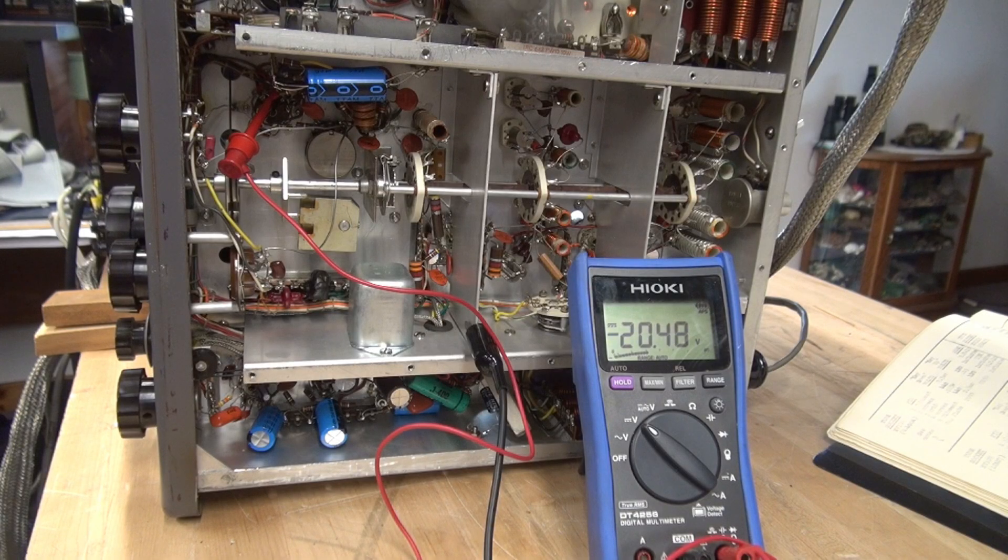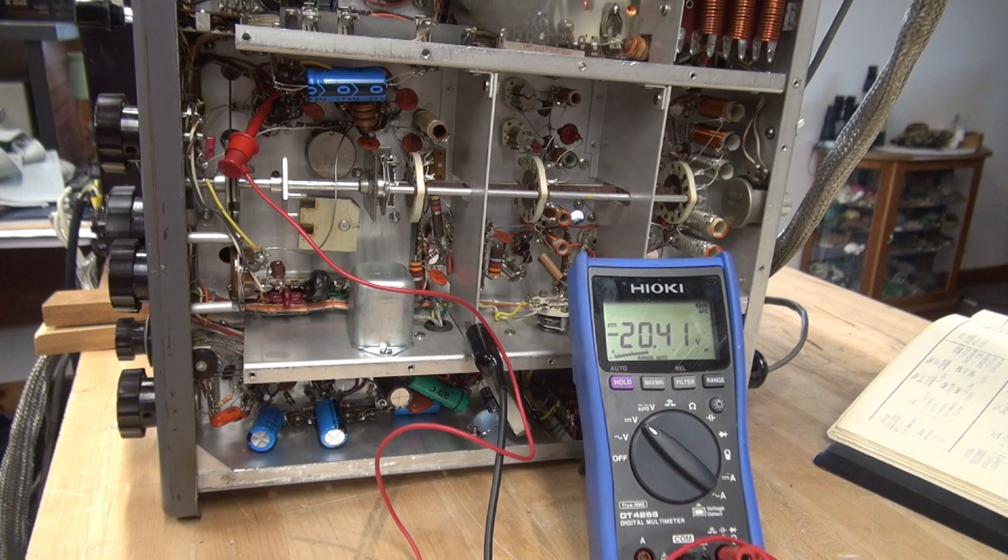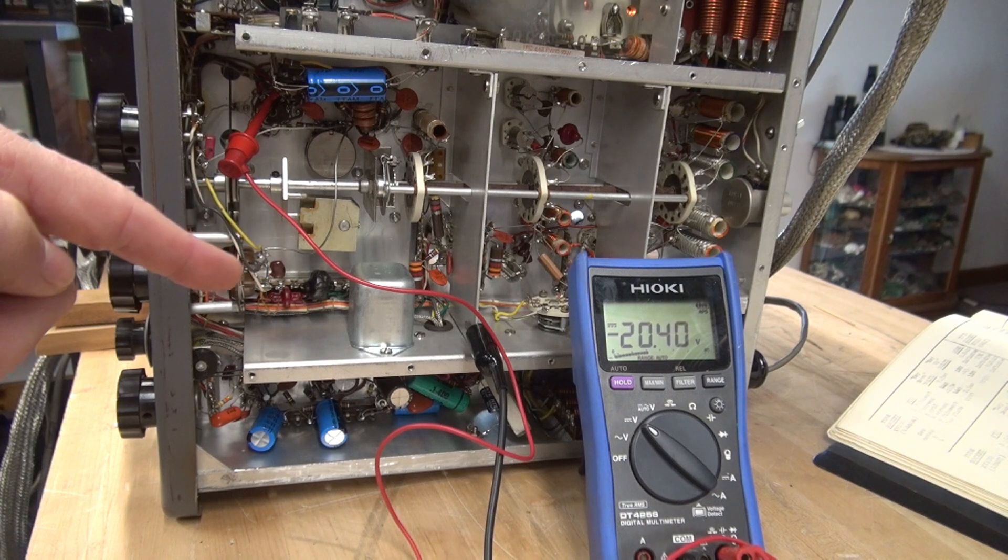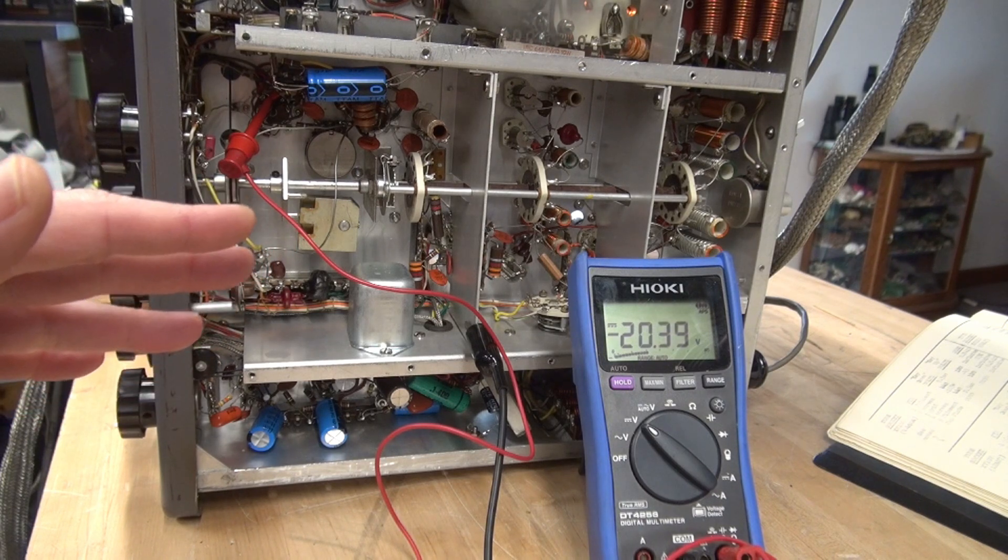Alright, I'm still connected to pin 7 of the 12AU7, which is the keyer tube in the Johnson 500, according to the manual. When I'm in standby position, that voltage should be negative 45 volts. You can see we're only at negative 20.